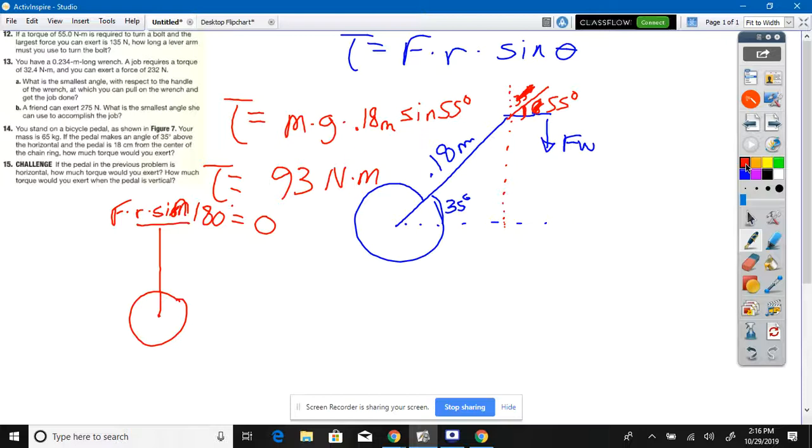How much would it be if it was horizontal? Torque equals mass times gravity times 0.18 meters times sine of 90. Now it's at maximum torque. Where are you really getting your power from when you pedal the bicycle? When the pedal is right there, horizontal. The other one's returning.